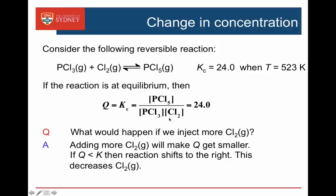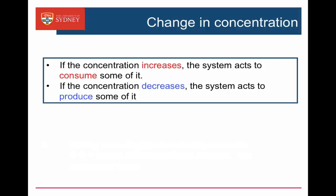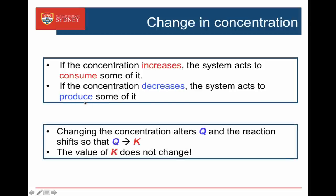This decreases the Cl2 that we've added. Le Chatelier's principle says that if we increase the concentration of one component of our equilibrium mixture, the system acts to consume it — the reaction shifts in order to reduce that thing that we've added. If we decrease the concentration of one part of our equilibrium mixture, the system acts to produce more of it, and the reaction shifts to the side that produces more of the thing that we've taken away. Notice that this is all about Q: it's Q that changes when we change the concentrations, and the reaction just shifts so that Q is equal to K again.